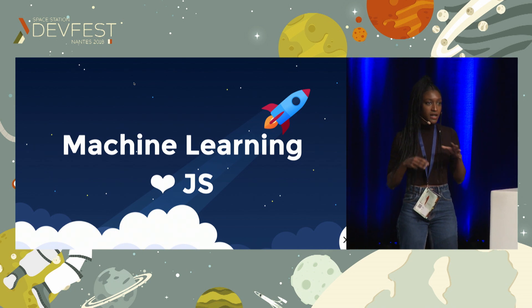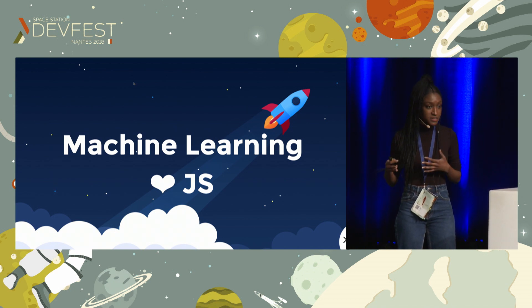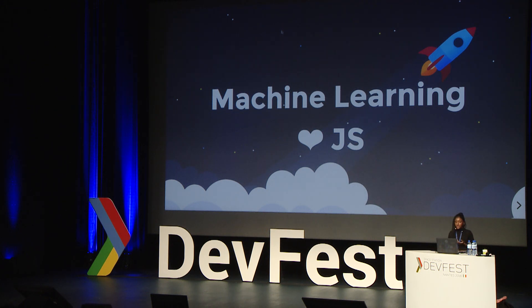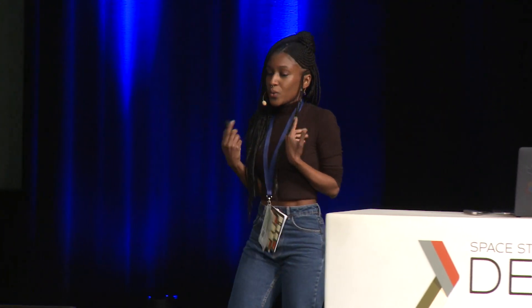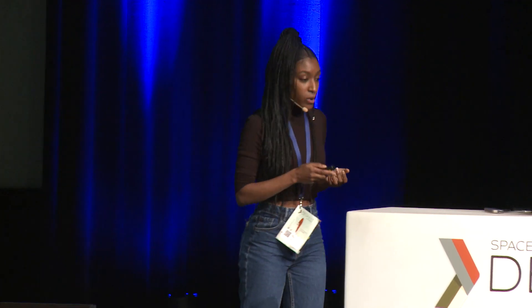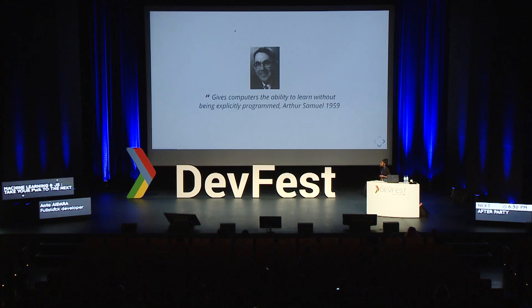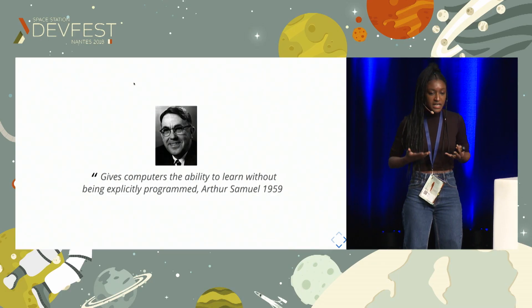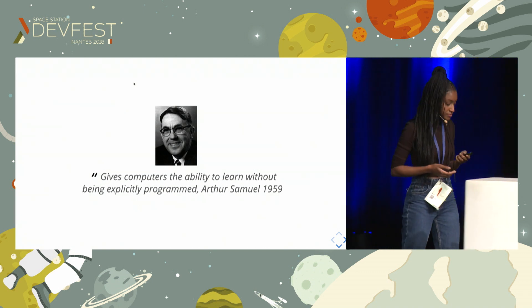Before we really start, I would like to introduce a few basic concepts in order for you to better understand what we will talk about later — and also for those that are not especially familiar with machine learning, not to be completely lost. So first, what is machine learning? According to Arthur Samuel, machine learning gives computers the ability to learn without being explicitly programmed for it. When we do machine learning, what we almost always do is create a model and make some predictions.